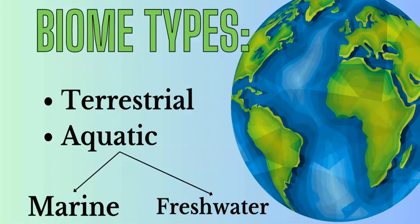Then you have the aquatic biomes, which are the ones inside or under or within the oceans or the water. You've got two types: marine, which is mostly the oceans and saltwater-based biomes, and freshwater biomes, which could be on land — lakes, rivers, streams, and those types of moving or standing water that is freshwater.